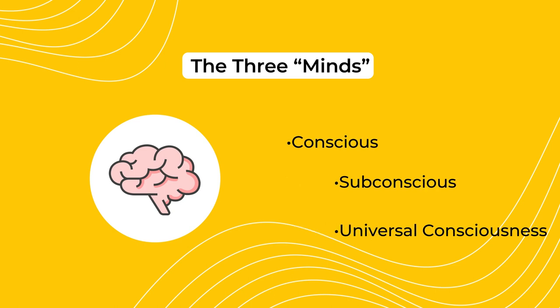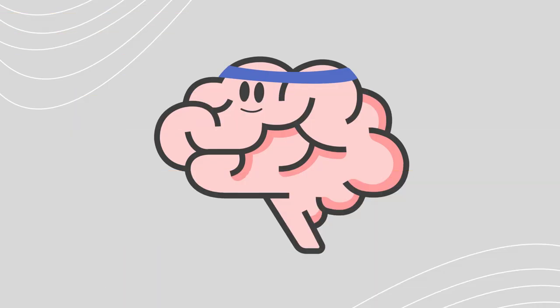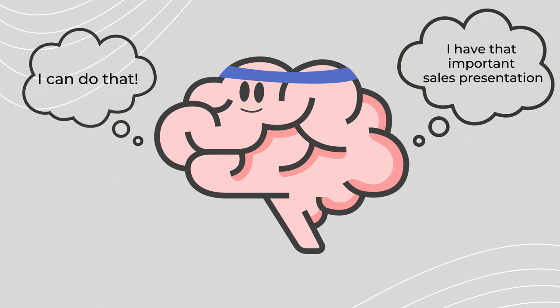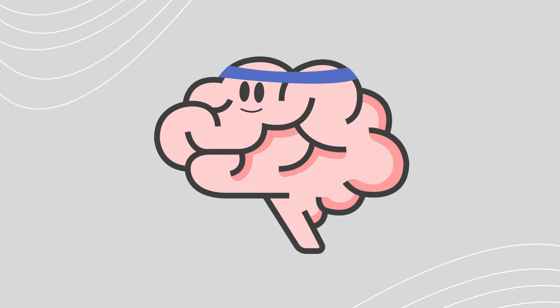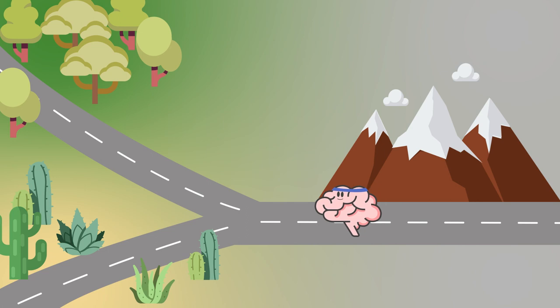First, let's begin with your conscious mind. Murphy explains that this mind is your active mind. It contains all of the thoughts and feelings that you're aware of at any given moment. You use this mind to judge your environment and you make choices and decisions based on those judgments.